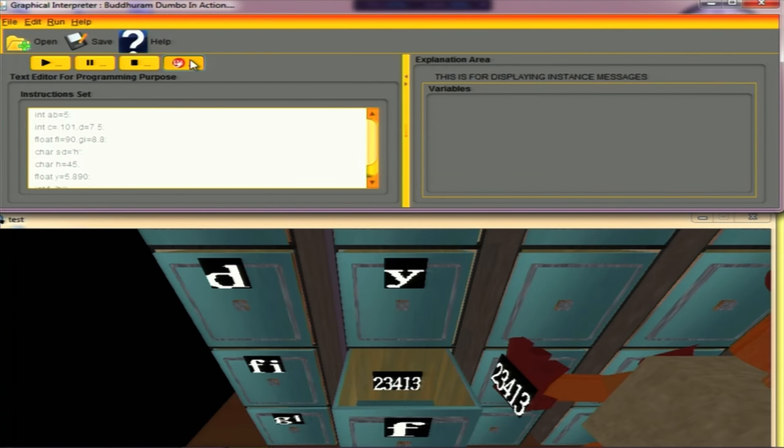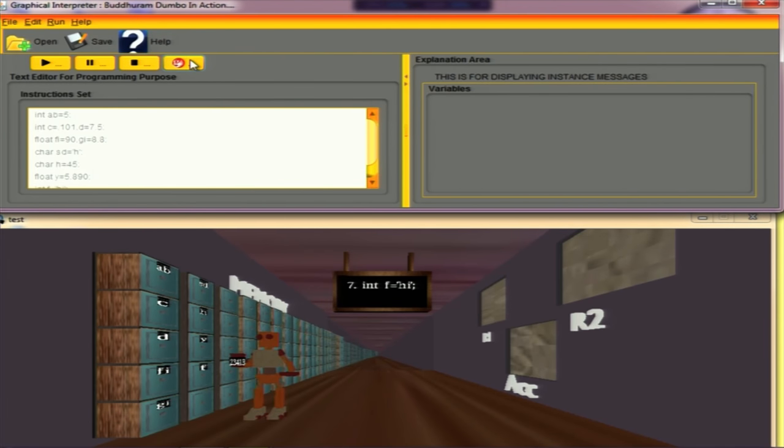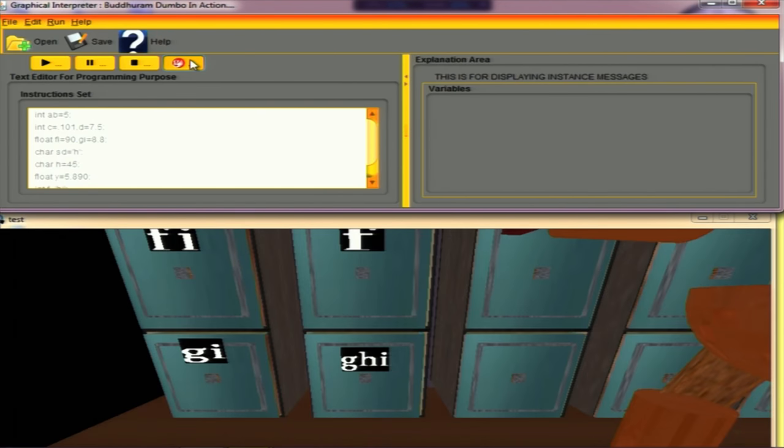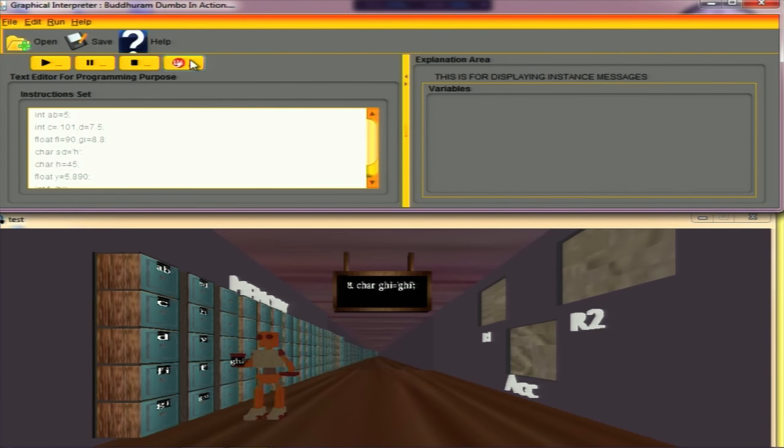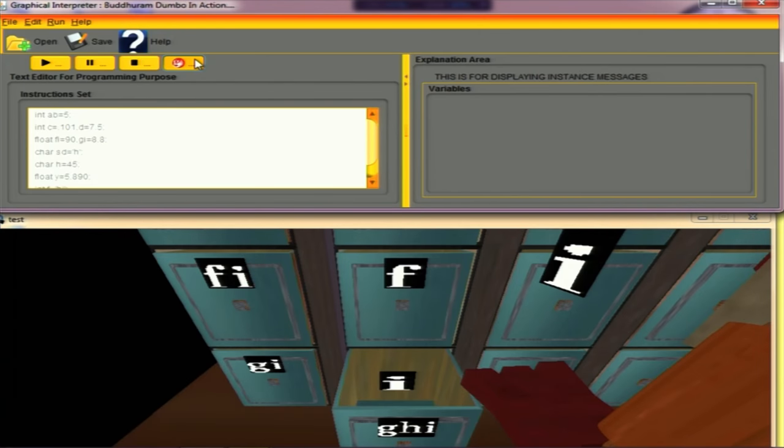Then it gets char ghi. Again ghi is not a character type. So what it does is it just extracts the last character from the string and then it gives to the box.